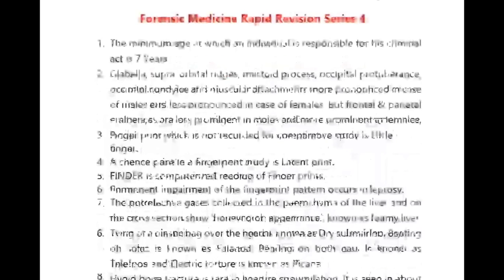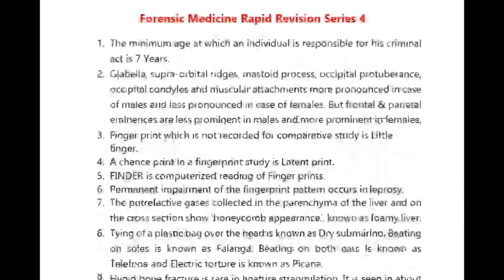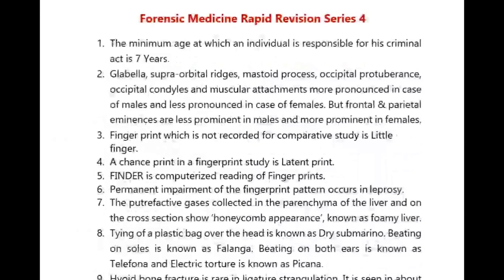Forensic medicine rapid revision series 4. The minimum age at which an individual is responsible for his criminal act is seven years. Glabella, supraorbital ridges, mastoid process, occipital protuberance, occipital condyles, and muscular attachments are more pronounced in males.